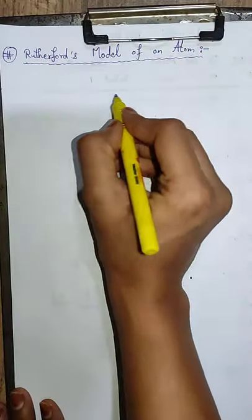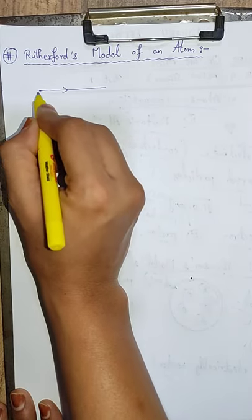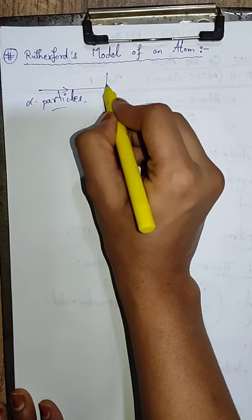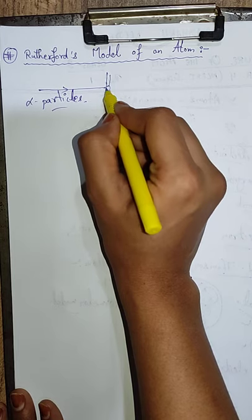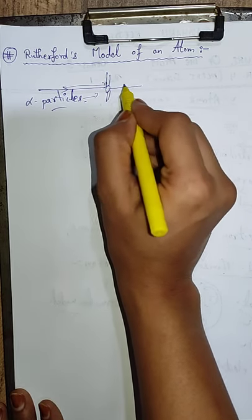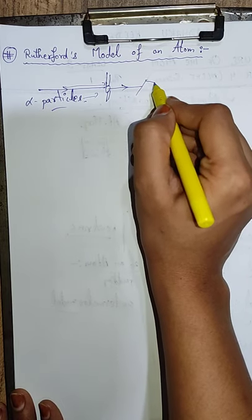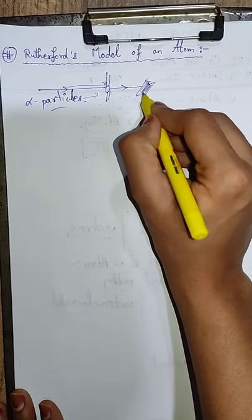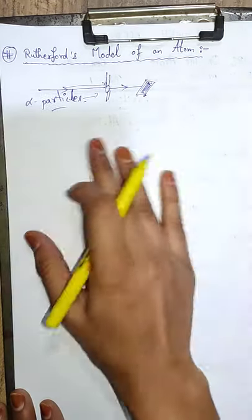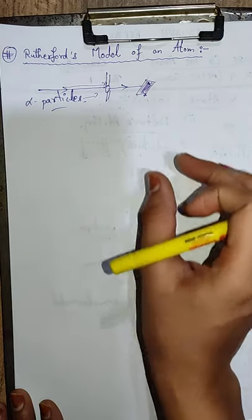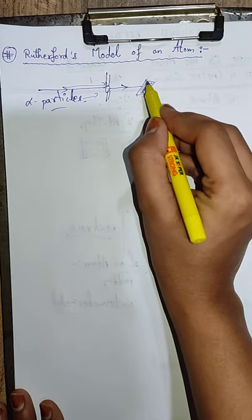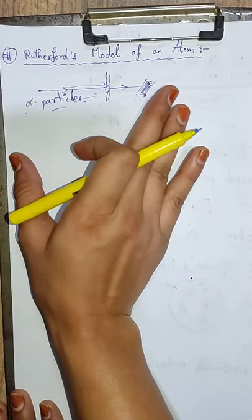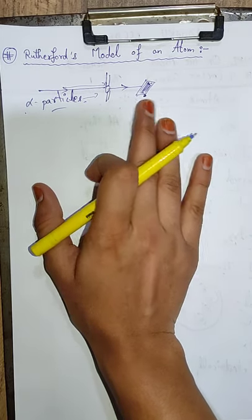Isko is tariqe se samajh sakte hain — yahan se alpha particles ki rays aati hain, aur inko ek thin slit se pass karwaya taaki extra light jo aa rahi hai idhar udhar se woh na aaye aur experiment ki accuracy zyada rahe. Aur inko ek thin gold foil pe hit karwaya. Students, here I would like to remind ki gold is a metal, aur metal ki bahut khaas property hoti hai ki woh ductile hote hain — metals malleable bhi hote hain, yani they can be beaten into thin sheets. Toh usi property use karte huay gold ki ek bahut hi patli chaadar banai aur usko yahan liya — alpha particles ko gold ke atoms pe hit karaya.